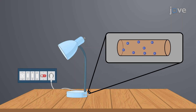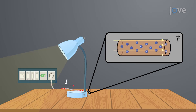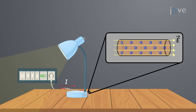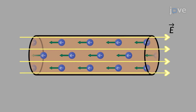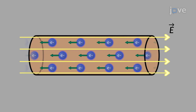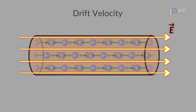Free electrons in a conductor travel in random paths and collide with other electrons and particles. In an electric field, the randomly moving electrons gradually drift in the direction opposite to the applied electric field. Thus, the average velocity of free charged particles in a material due to an electric field is known as the